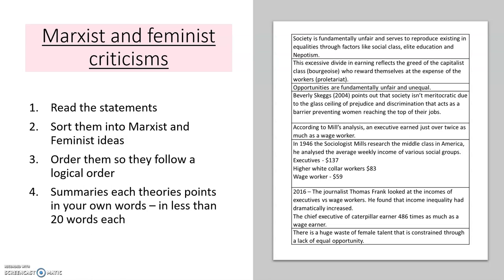Work out which statements relate to feminist ideas and which relate to Marxist ideas. Think about the core or key ideas for each theory and see if you can work out which statement goes with which. Once you've got them into two categories, put them in a logical order — try to figure out which way makes sense when you read it. Then, using your own knowledge, summarize each theory in no more than 200 words — what is the gist of Marxism, what are they saying, how are they criticizing the functionalist argument, and what are feminists saying and what is their criticism?